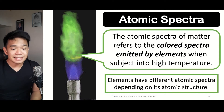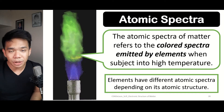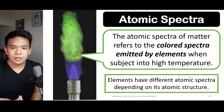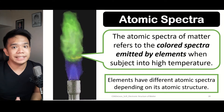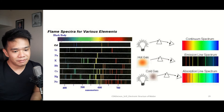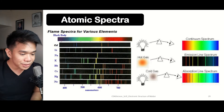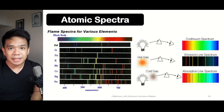A best example of this idea is the atomic spectra. When we talk about atomic spectra, this refers to the colors that are emitted by certain elements when they are subjected to high heat temperature. The atomic spectra of every element depend on their characteristics, mainly because of their energy levels. As illustrated, there are certain elements that show different atomic spectra, and the atomic spectra of matter depends on the element itself, mainly because of their energy levels.